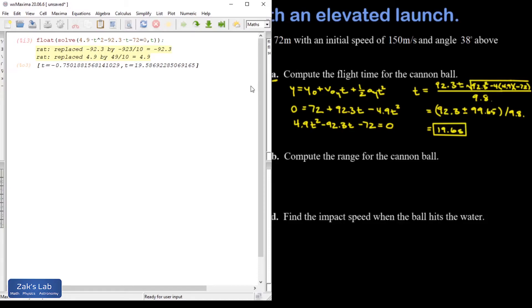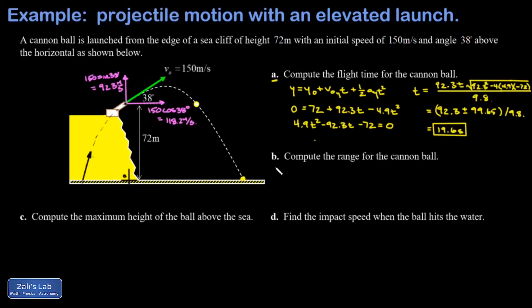In part b we're asked for the range of the cannonball—in other words, what's the horizontal position relative to the launch position when this thing lands. We normally use an R for that, so I'll just pop that into the diagram. We look at the horizontal analysis of the flight.